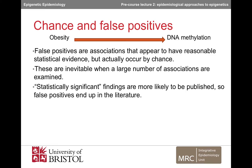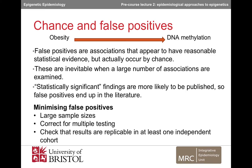False positives are associations that appear to have reasonable statistical evidence attached to them but actually occur by chance. Many studies in epigenetic epidemiology measure epigenetic mechanisms at multiple sites in the genome, which increases the chance that some sites will be false positives. Publication bias means that statistically significant findings are more likely to be published, so false positives can end up in the literature. The chance of reporting false positives can be reduced by studying large numbers of people, which will yield more reliable, replicable results. The greater statistical power afforded by larger sample size will also reduce the rate of false negative findings. Regardless of sample size, correcting p-values for multiple testing is essential. Finally, if positive results can be replicated in at least one independent cohort of similar individuals, this would provide further confidence in the findings.